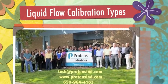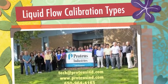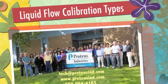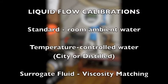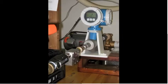Here are the liquid flow rate calibration types provided by Proteus Industries. Flow rate is calibrated in either room temperature ambient water, temperature controlled water, which is either city water or distilled water, or a surrogate fluid so that the viscosity can be matched.